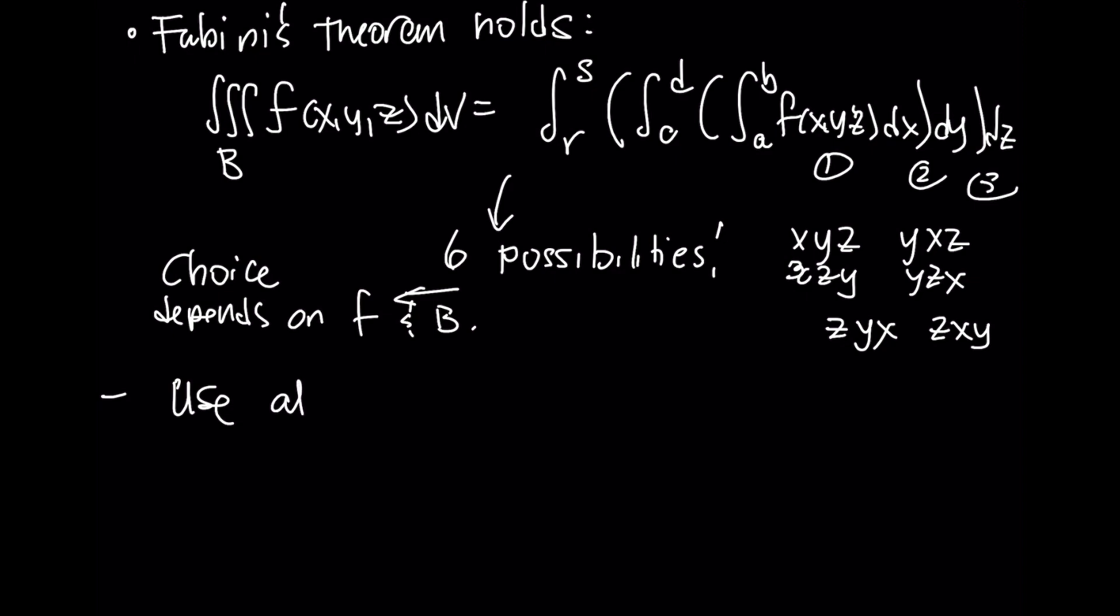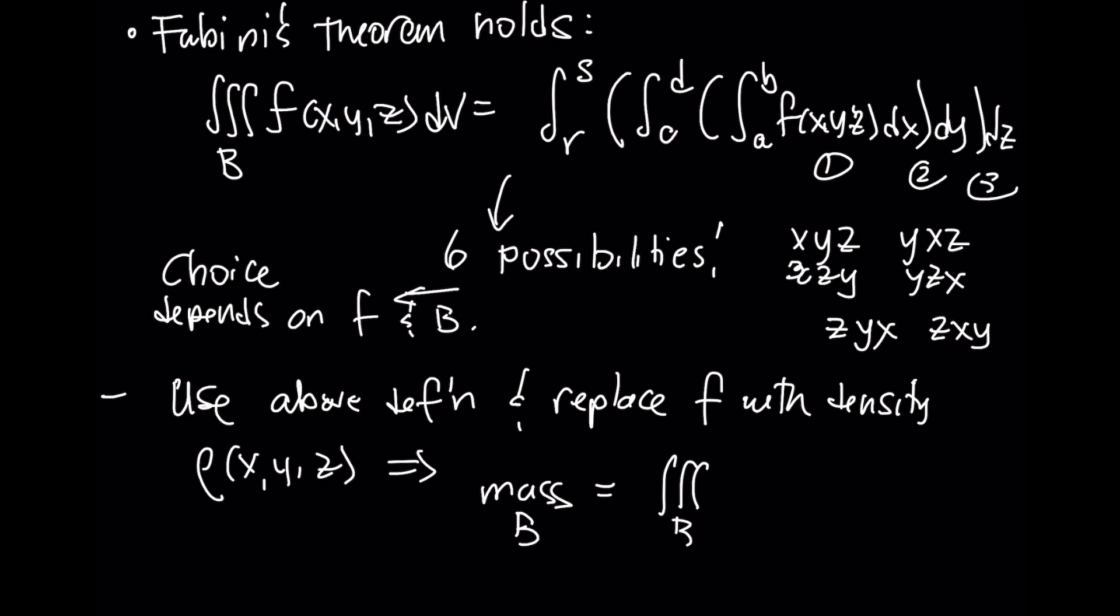We can use the above definition, and we can simply replace our function with density, rho of x, y, and z. The mass of a box B is simply going to be the triple integral of the density defined over that rectangular box.